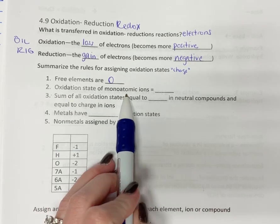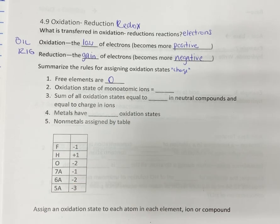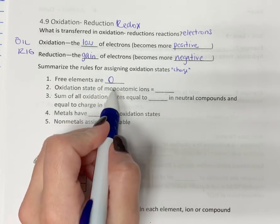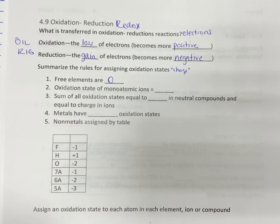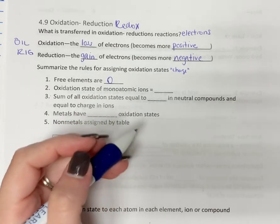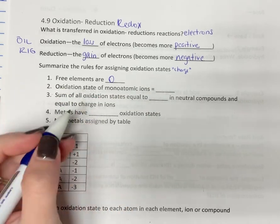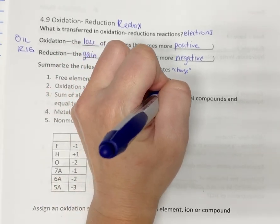If you have a monoatomic ion, like a metal, like calcium plus two or iron plus three, things like that, so if it's a monoatomic ion, one atom by itself that has a charge, its oxidation number is the same as its charge.